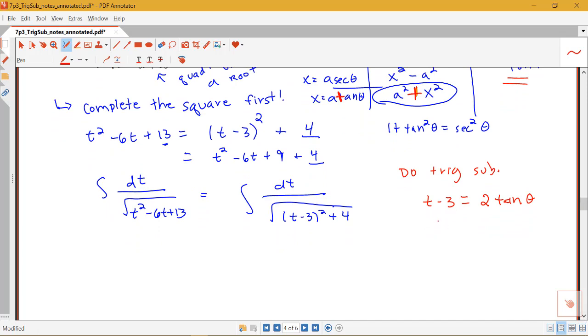So notice that if t minus 3 is 2 tan theta, that means t equals 3 plus 2 tan theta. And then I need to figure out what dt is. Notice the derivative of 3 would just be 0. So I'll have 2 times the derivative of tangent, which is secant squared, and I don't want to leave off my d theta there.